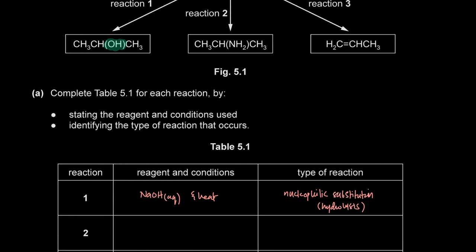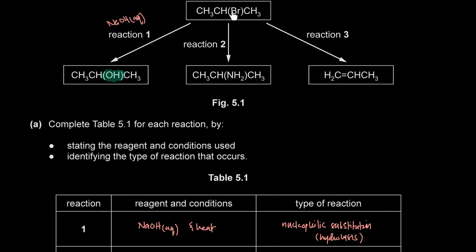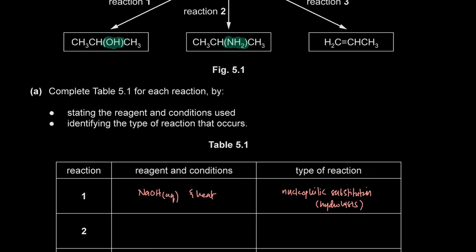Reaction 2: the bromine is substituted by an NH₂ group. This is again nucleophilic substitution. Reagent: concentrated ammonia in ethanol; conditions: heat under pressure (or heat in a sealed tube). Reaction 3: 2-bromopropane forms propene — this is elimination. We eliminate HBr by removing bromine and a hydrogen from the neighboring carbon, forming a double bond. Reagent: NaOH in ethanol; conditions: heat.